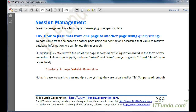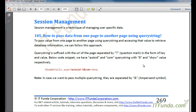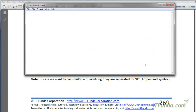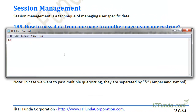Before we proceed further, let's first understand what a query string is. A query string is basically a string that is suffixed with the URL. For example, if my URL is http://www.itfunda.com/default.aspx, then we start with a question mark, then add the query string name — for example 'a' — and then its value, for example 5.